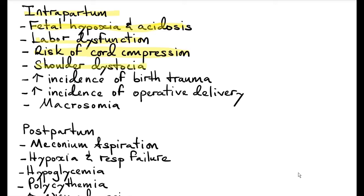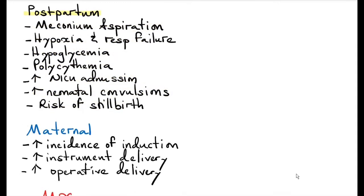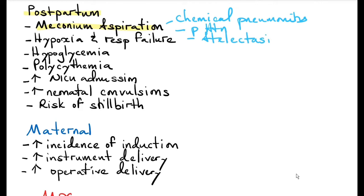There is increased risk of shoulder dystocia because of the large baby, and increased incidence of birth trauma due to the large size and non-molding of the head from hardened skull bones. There is also increased incidence of operative delivery and macrosomia. Postpartum fetal complications include meconium aspiration, which results in chemical pneumonitis, pulmonary hypertension, and atelectasis — the complete or partial collapse of the lung or a section of a lobe. You can also have hypoxia, respiratory failure, hypoglycemia, and polycythemia, which is a compensatory mechanism due to chronic hypoxia. There are increased chances of NICU admission, neonatal convulsions, and risk of stillbirth.